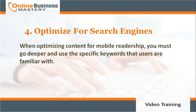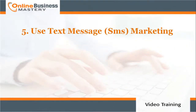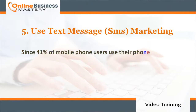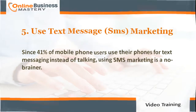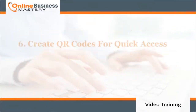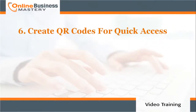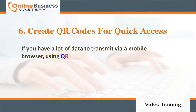Number four: optimize for search engines. When optimizing content for mobile readership, you must go deeper and use the specific keywords that users are familiar with. Number five: use text message SMS marketing. Since 41% of mobile phone users use their phones for text messaging instead of talking, using SMS marketing is a no-brainer.